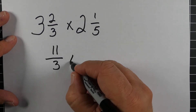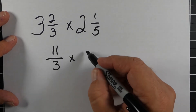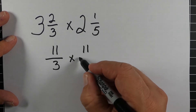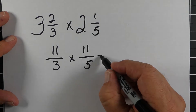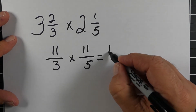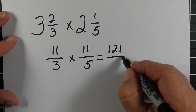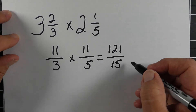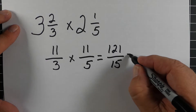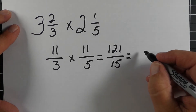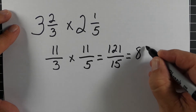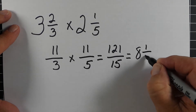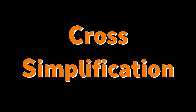Here's another example. We make three and two-thirds into 11-thirds, and two and one-fifth becomes 11-fifths. We multiply across: 121 over 15. Then we divide — 15 goes into 121 eight times, with a remainder of one, so the answer is eight and one-fifteenth.